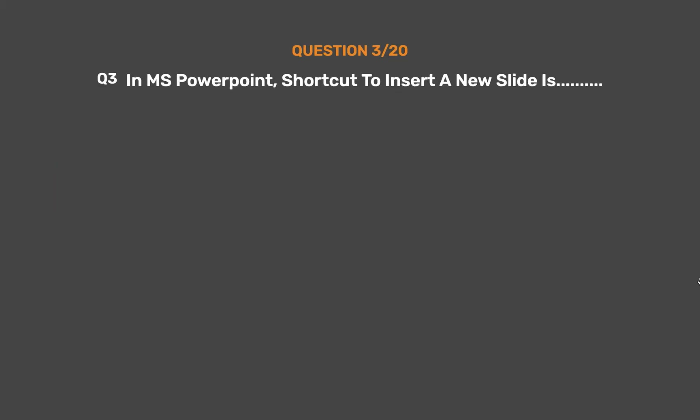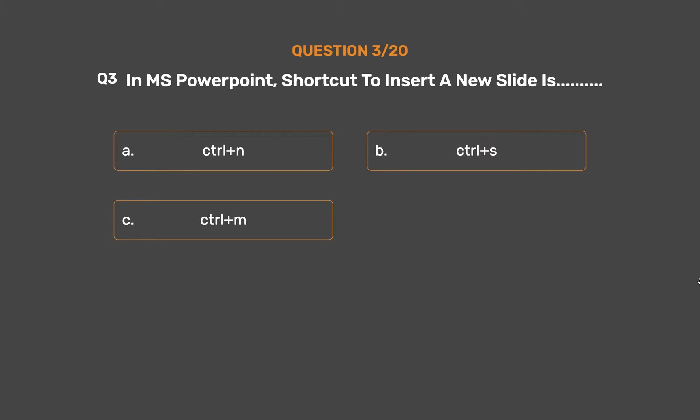Question number 3. In MS PowerPoint, the shortcut to insert a new slide is: Option A: Ctrl+N. Option B: Ctrl+S. Option C: Ctrl+M. Option D: Ctrl+P.